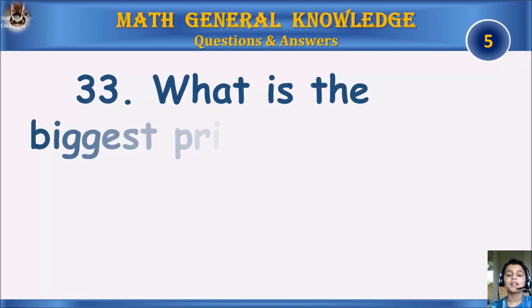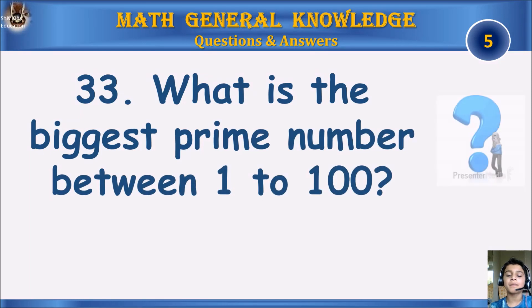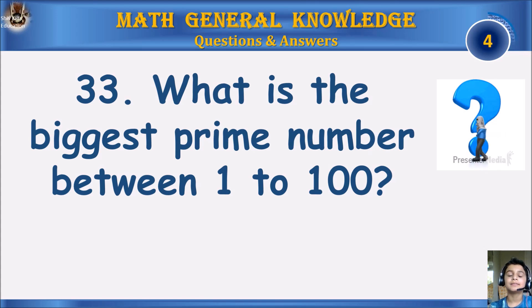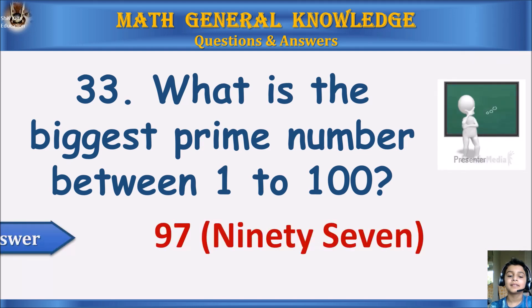What is the biggest prime number between 1 and 100? Your time starts. The answer is 97.